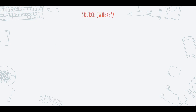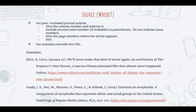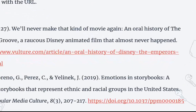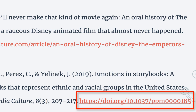To finish our APA citation, we have the source. This is information that can help your reader know how to locate these items. For peer-reviewed journal articles, include the volume number and italicize it. Include the journal issue number if available, in parentheses — do not italicize issue numbers. Give the page numbers where the article appears. Finally, include the DOI, also known as the digital object identifier. For websites, just end with the URL, also known as the link to the webpage. For the Vulture article, you can see we just give the URL. For the peer-reviewed journal article, you can see we have the volume number 8 italicized, the issue number 3 in parentheses, then the page numbers 207 to 217, and finally the DOI.